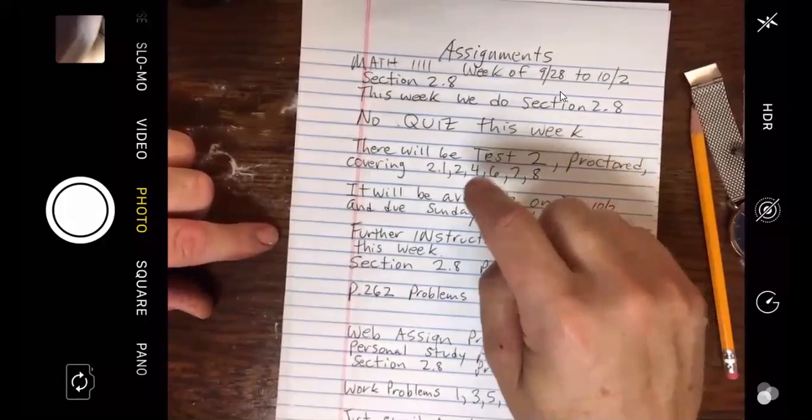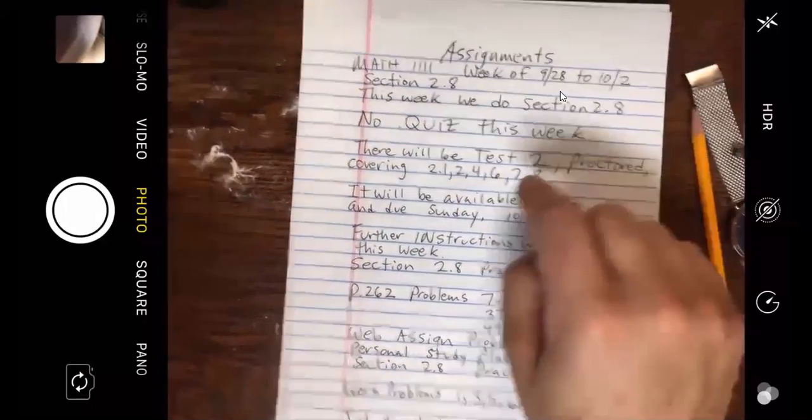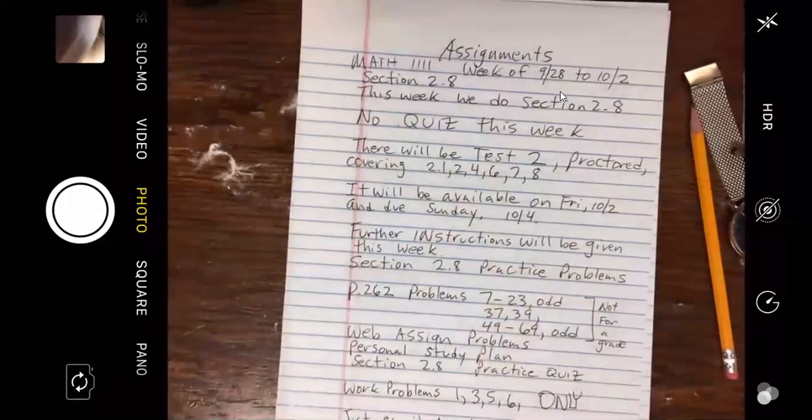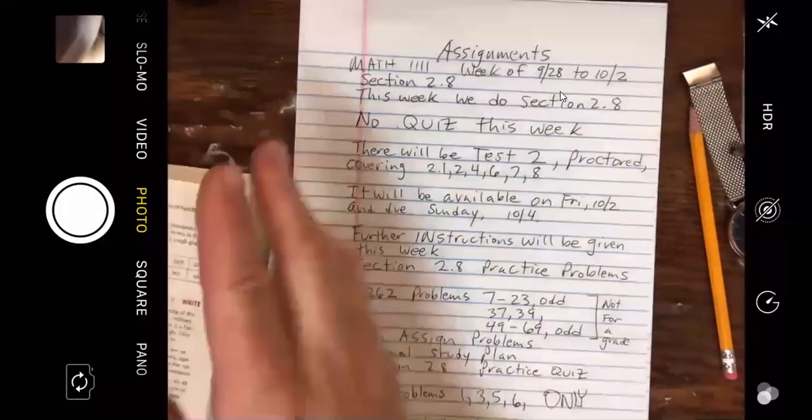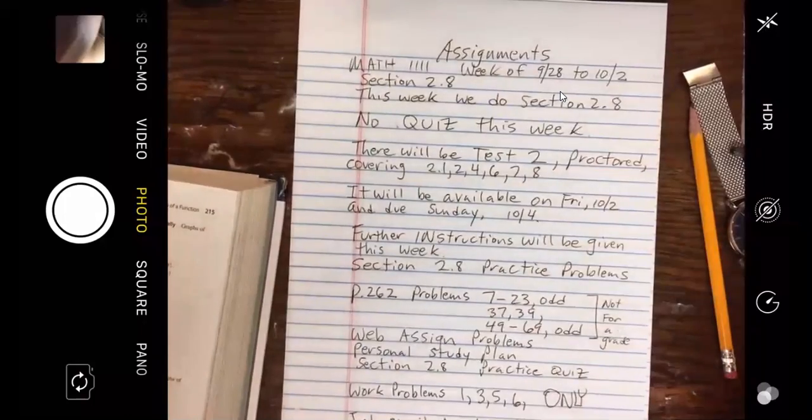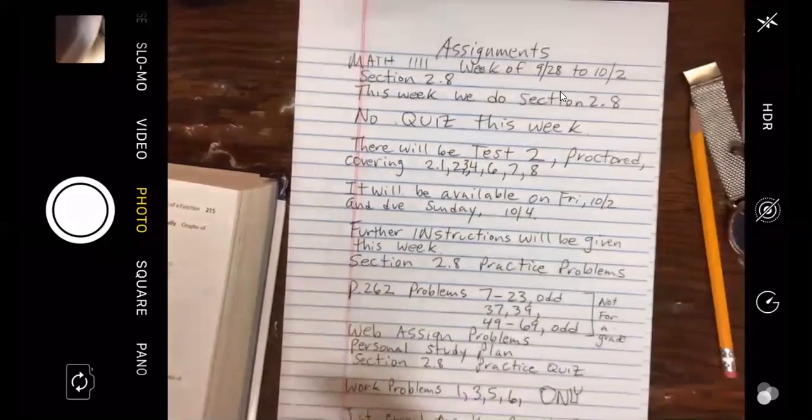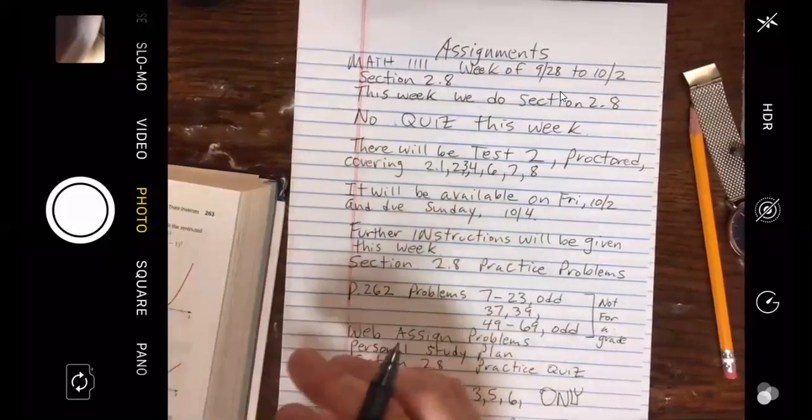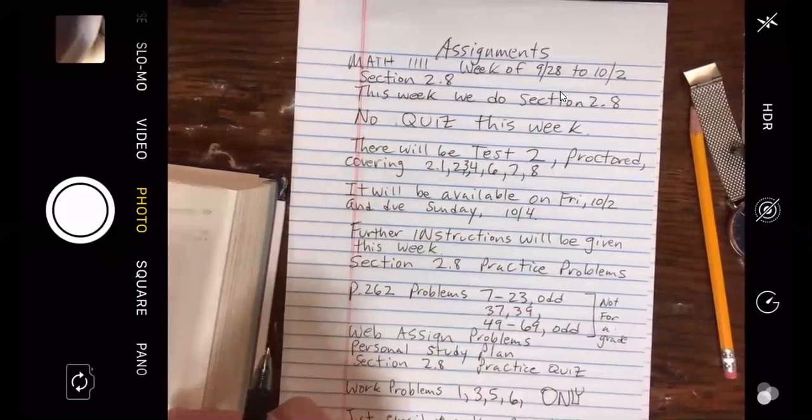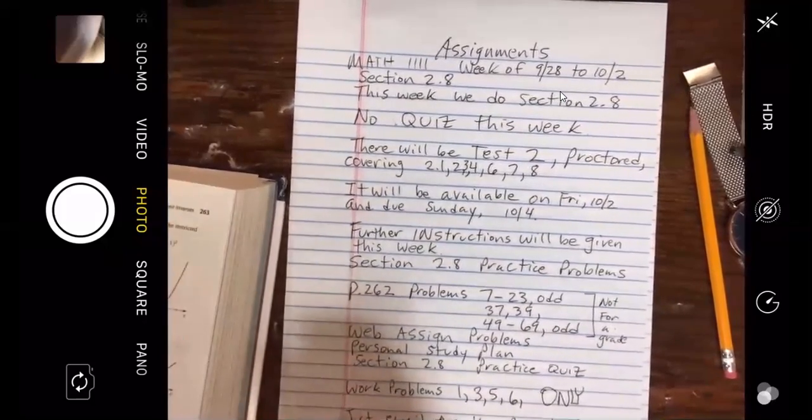It covers 2.1, 2.2, 2.4, 2.6, 7, and 8. Let me just double check that that is correct. 2.2, 2.3, 2.4, 2.6, 2.7, and 2.8. So yes, I left off 2.3. My apologies.